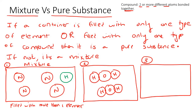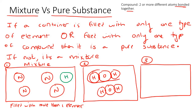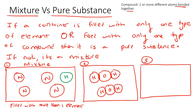Moving on to container number two. Here we have a compound, because a compound is when you have two or more different atoms bonded together. We have H, hydrogen, oxygen, and hydrogen — they are touching, so this is a compound. This is also a compound, and both compounds are the same. Since the container is filled with only one type of compound, it is a pure substance.